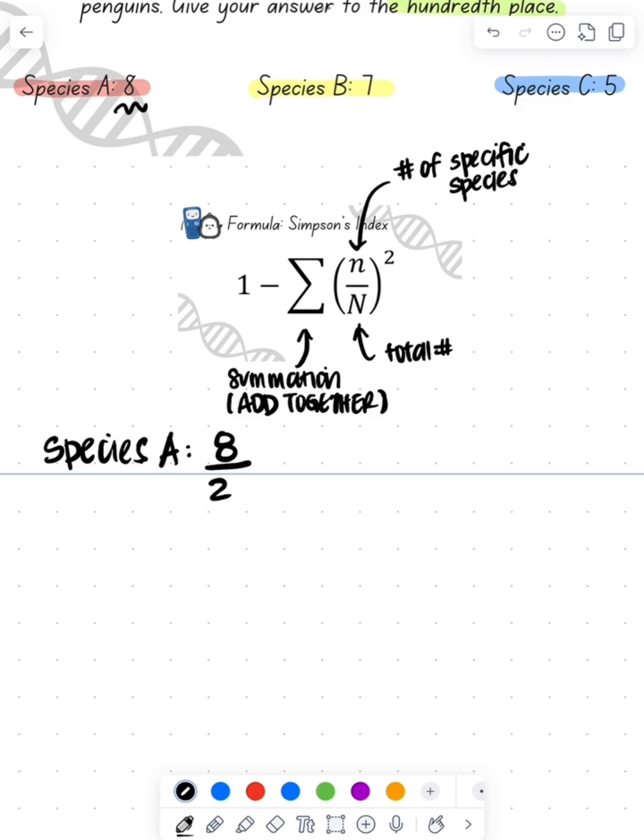So species A has 8 different individuals, so 8 over 20, which is going to give me 0.4. Now I'm going to square that, so 0.4 squared is 0.16, and I'm going to color code it so that it kind of matches what I did above.